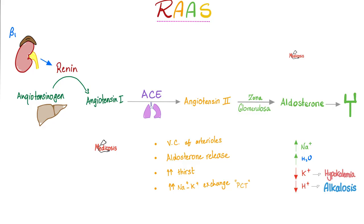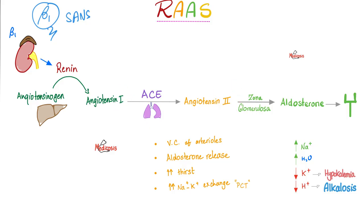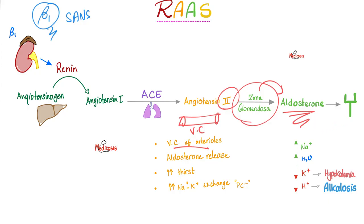This is the most important slide in the video. Renin is released by the kidney under sympathetic nervous system stimulation via the beta-1 adrenergic receptor. Renin converts angiotensinogen from the liver into angiotensin 1. Thanks to angiotensin-converting enzyme in the lungs, angiotensin 1 becomes angiotensin 2, which has two main functions: vasoconstricting arterioles, and boosting release of aldosterone from the adrenal cortex's zona glomerulosa. Aldosterone reabsorbs salt and water — raising blood pressure — and secretes potassium and hydrogen, causing hypokalemia and metabolic alkalosis.